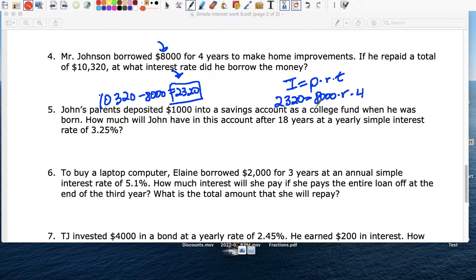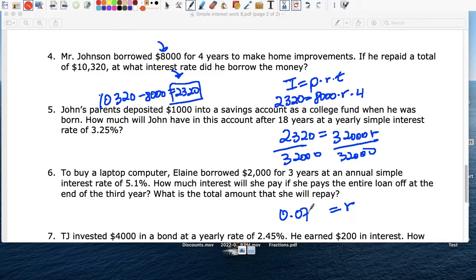So what rate did they charge him? $2,320, that's $32,000R divided by $32,000. And R equals $2,320 divided by $32,000 equals 0.0725.